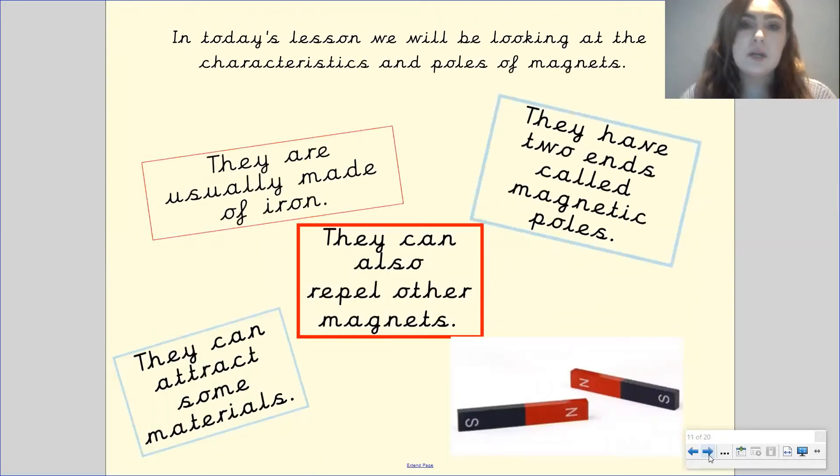So in today's lesson we are going to be looking at the characteristics and poles of magnets. So magnets are usually made of iron, they have two ends which are called magnetic poles, they can attract some materials and they can also repel other magnets. Now I'm going to go into what the words attract and repel mean in just a moment.